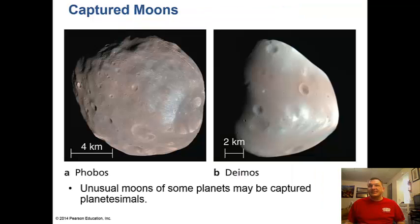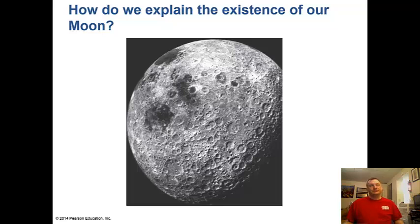Why is this the case? Some planets have captured asteroids and made them into moons. These are the moons of Mars: Phobos and Deimos. Unusual moons of some planets may be captured planetesimals. These are not very big - they're 6 and 12 miles across, compared to our moon which is a lot bigger.